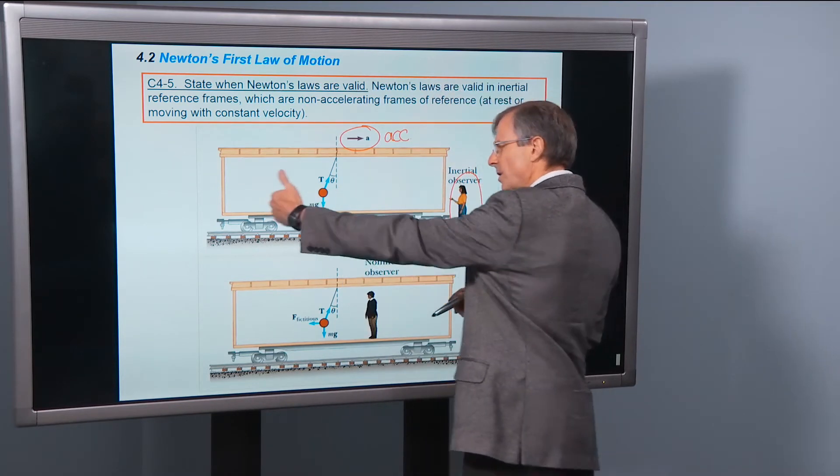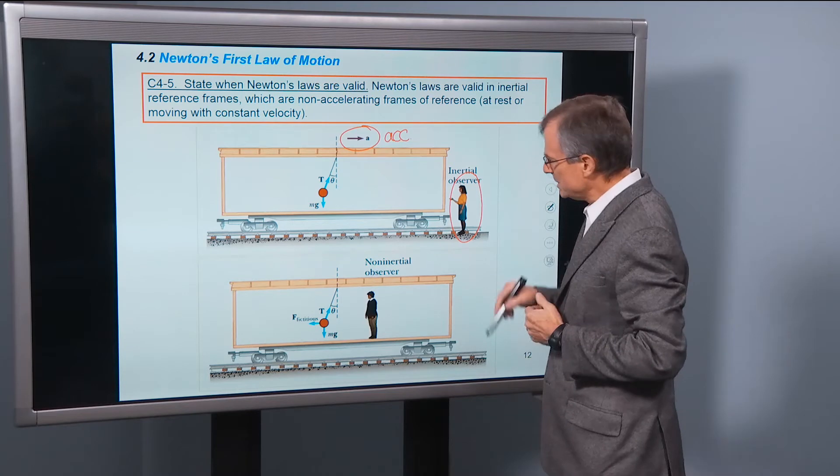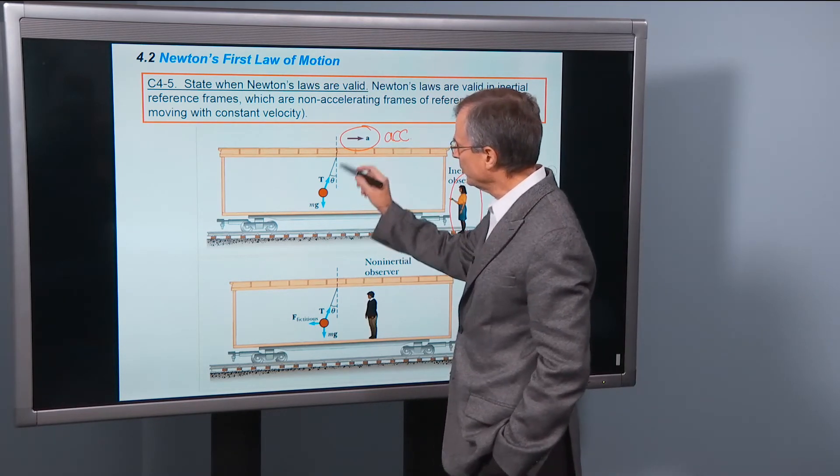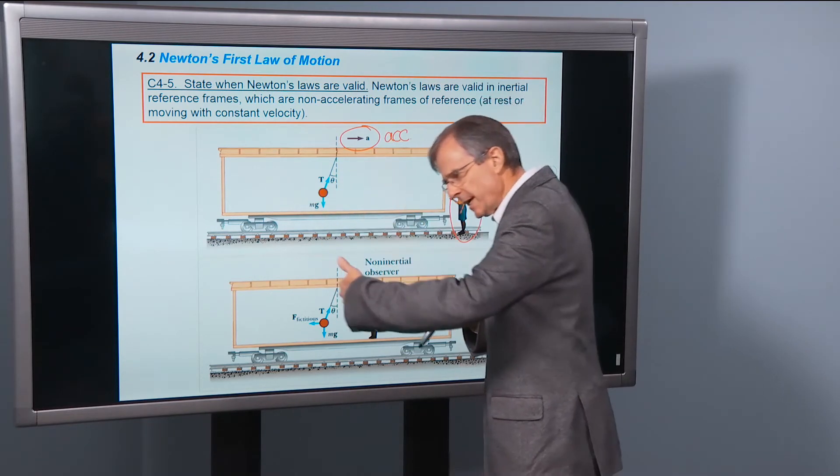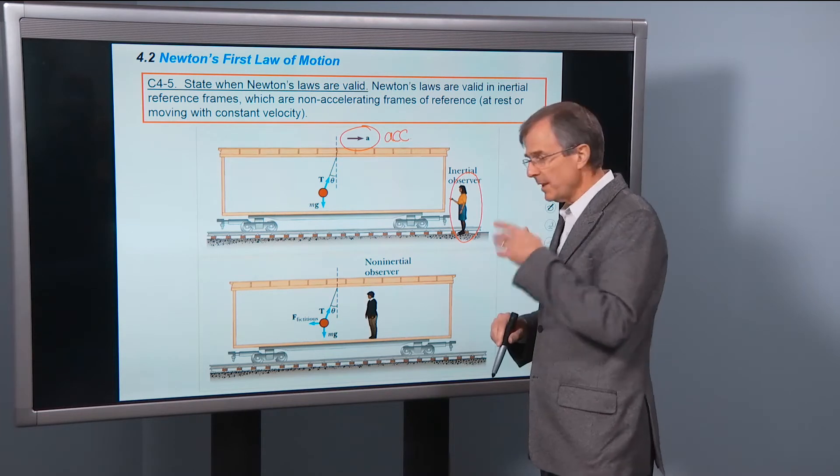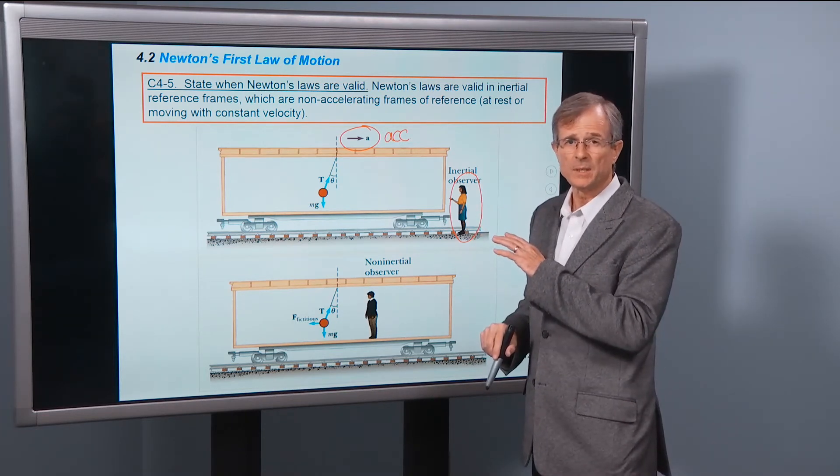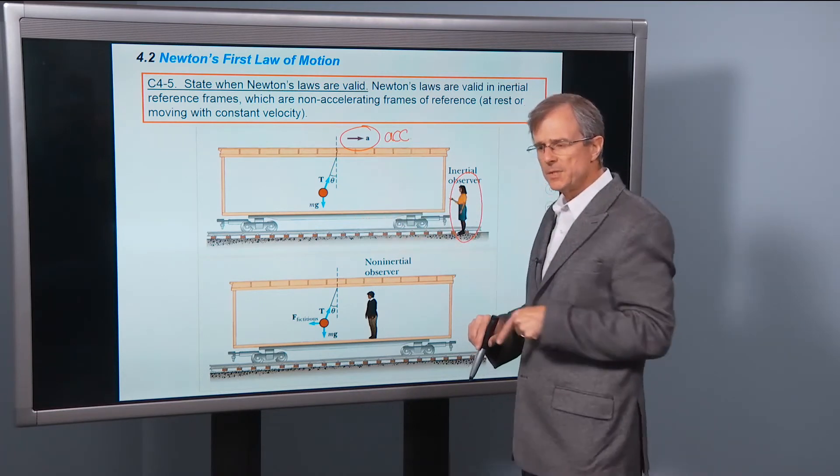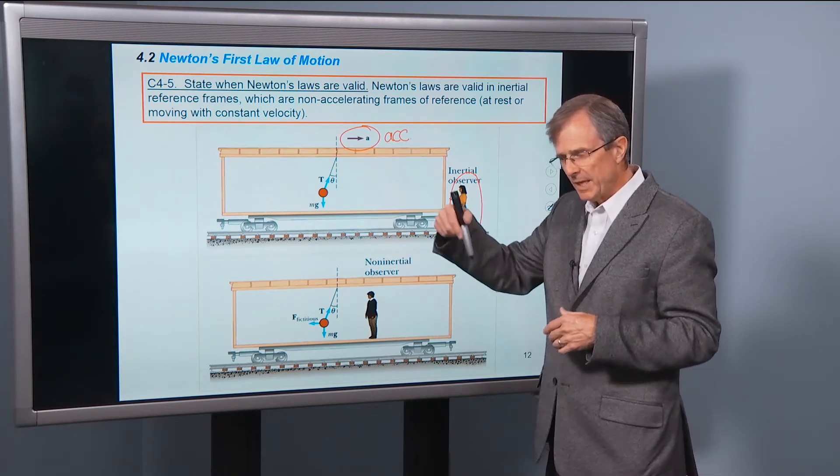This woman is standing here on terra firma and watching a train as it's accelerating to the right. So this train is starting slow, getting faster. And what she sees when she looks at a ball hanging from a string from the ceiling, is that that ball is going to swing backward as the train accelerates. Now that ball won't swing backward if the train is moving at constant velocity. But if it's accelerating, it will swing backward.